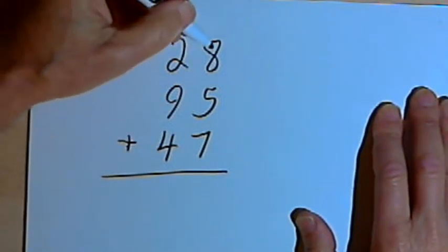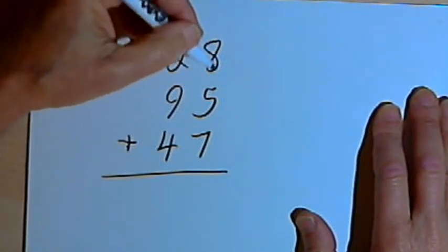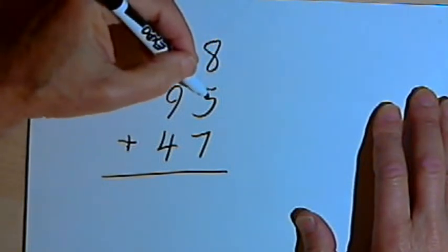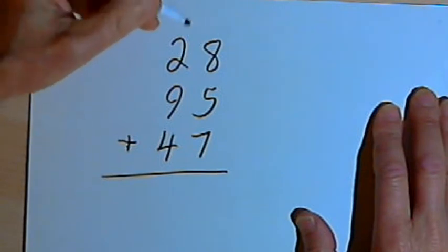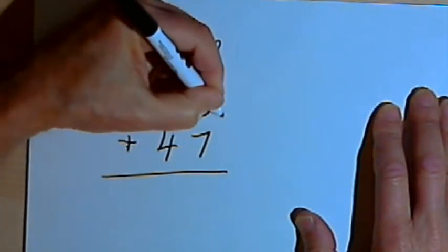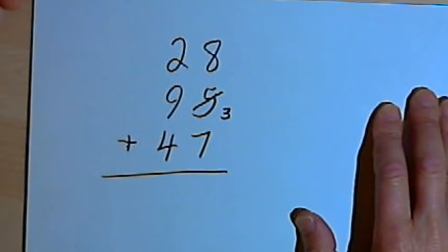So starting from the top, I'm going to take the 8 and the 5 and add them together. 8 plus 5 is 13. 13 is a two-digit number, so I'll cross out the 5 and just write the units part, the 3.